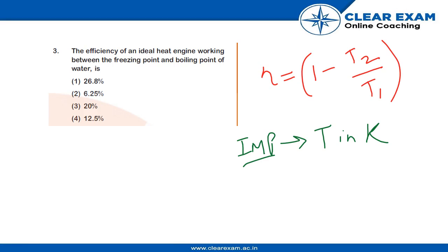Hello everyone, so here we have a question that says we need to find the efficiency of an ideal heat engine working between the freezing point and the boiling point of water. So we know the formula that is η equals 1 minus T₂ by T₁.